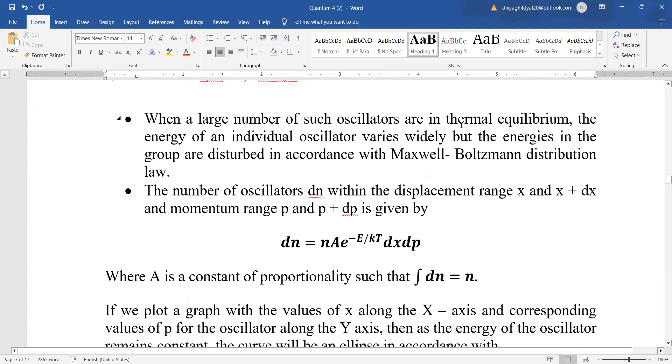Now, when large number of such oscillators are in thermal equilibrium, we use the Maxwell-Boltzmann distribution law which in the previous lecture we have done it in detail. The number of oscillations within x and x plus dx and momentum range p and p plus dp. If you remember previous lecture, we had covered this point that the phase space number of oscillators will be given by dn is equal to n into a where a is a constant of proportionality into e to the power of minus e upon kT dx dp and total number of oscillators dn equal to n.